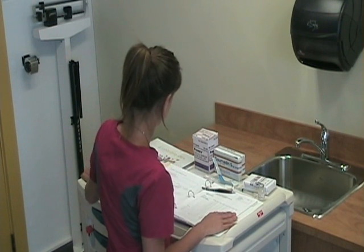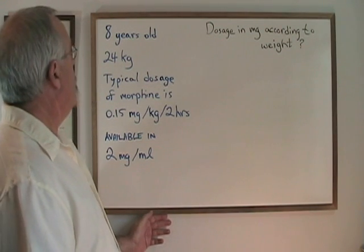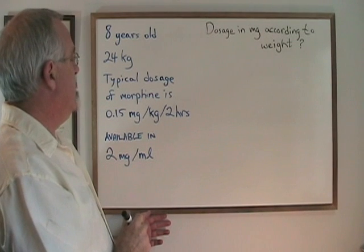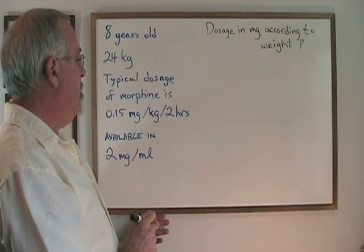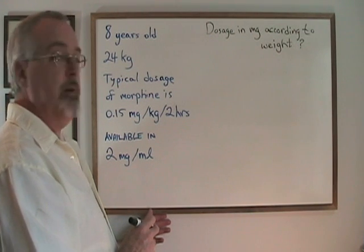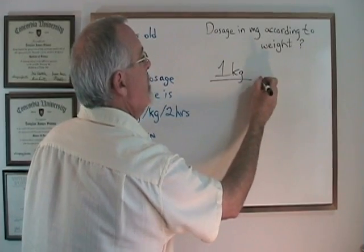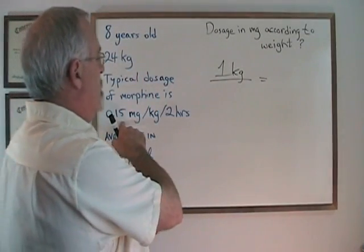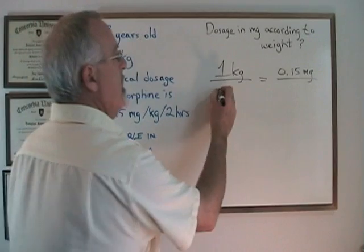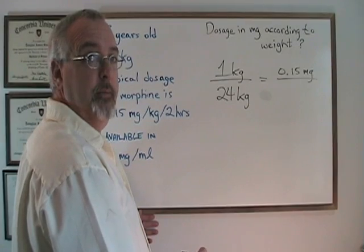Now I'm ready for my calculations. When calculating a dosage in a pediatric case, we have to correct for the weight of the patient. In this example, we have an eight-year-old who weighs 24 kilograms. The typical dosage of morphine is 0.15 milligrams per kilogram every two hours, but it is available in 2 milligrams per milliliter. One kilogram requires 0.15 milligrams, so if we have 24 kilograms, how many milligrams of the medication do we need?